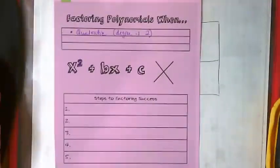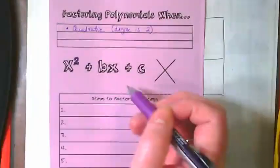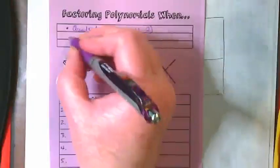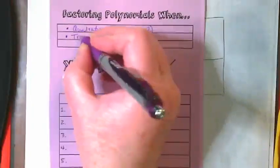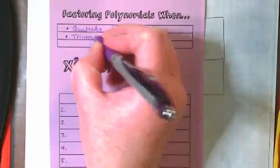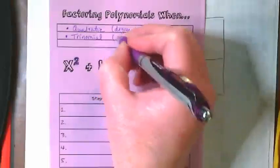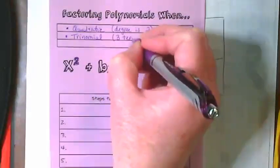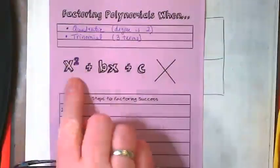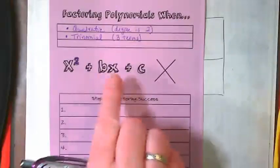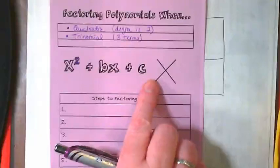The second thing that we need to make sure is true before we use this method is that this is a trinomial, which means we have three terms. We have this first term, the middle term, and the end term.